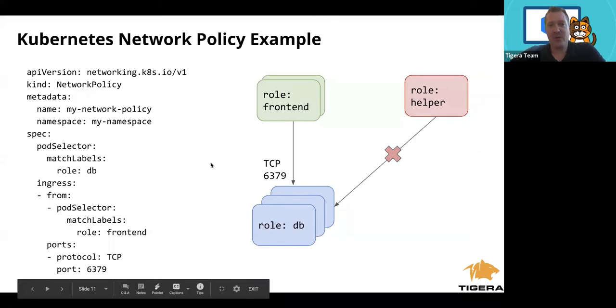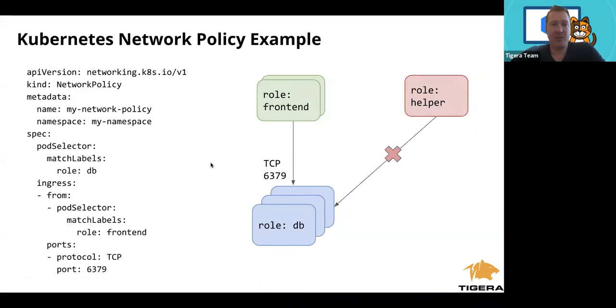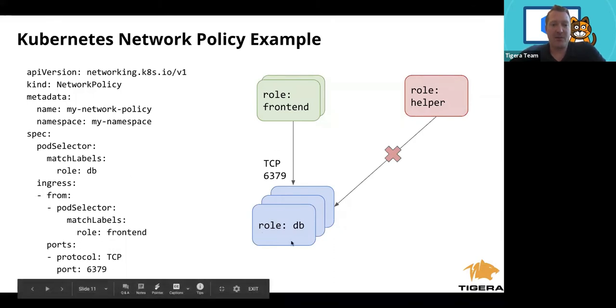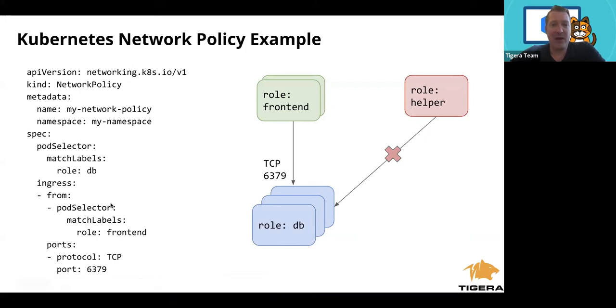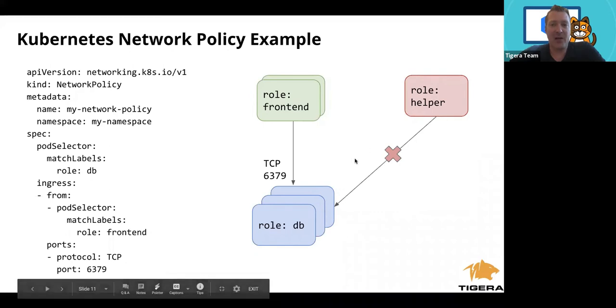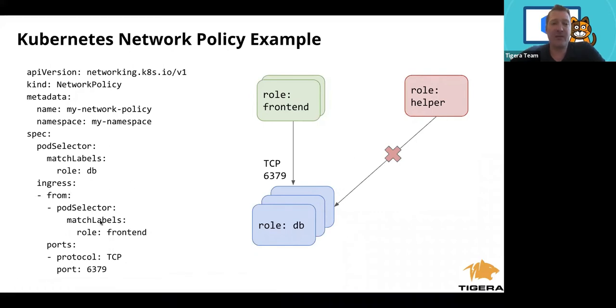What you don't see in here is any rule for this role equals helper. When you apply a network policy in Kubernetes, it will immediately instantiate like a deny all. If we didn't have this policy in place, this role equals DB would accept any connection. But now that we've defined what ingress is allowed, by default it will start to block ingress from any other service except for what's been defined. This gets us to that whitelist part of the zero trust security, least privileges model. And this is just base Kubernetes.